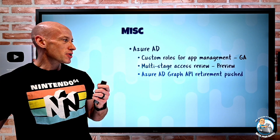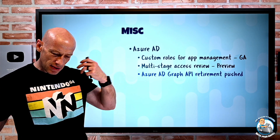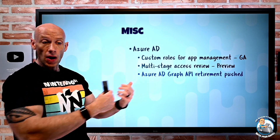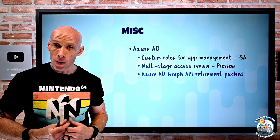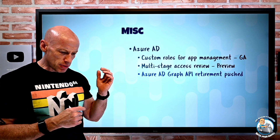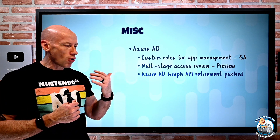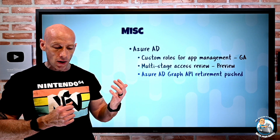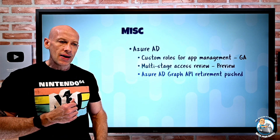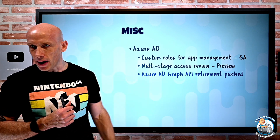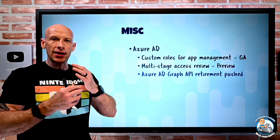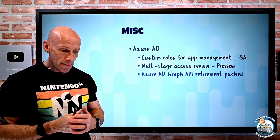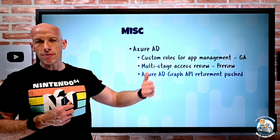Azure AD Graph API retirement has been pushed. There are different ways to interact with Azure AD, and what we want to move to is the Microsoft Graph — there's a Graph API, a Graph endpoint, and PowerShell commandlets for Graph. Originally they were going to retire the Azure AD Graph API at the end of June, but they have pushed it out to at least the end of the year. The old PowerShell modules for Azure AD and MS Online, and ADAL, will continue running for a bit longer. You should still get off of these things and move to Microsoft Graph — that is the direction — but they've pushed back that retirement a little bit further.